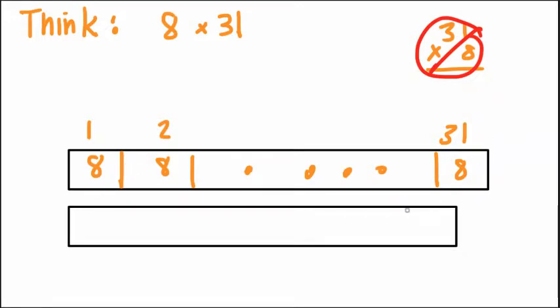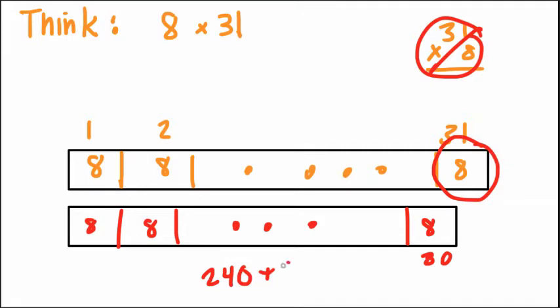So what happens if we think of this instead as 8 groups of 30? We shrunk it a little. We took one off. Why would 8 groups of 30 be easier? Well, because it's got a 0 at the end and we're multiplying by 10s, right? So 8 times 30 in our head, 8 times 3 is 24. I add a 0. I have 240. Then I have one more group plus 8.